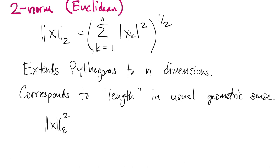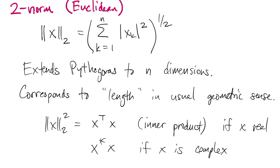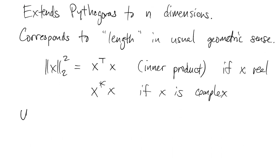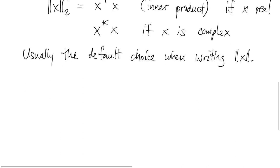The 2-norm has a very important property. The 2-norm of a vector squared is the inner product of that vector with itself if x is a real vector, or we have to use the Hermitian if x is a complex vector. But we won't be doing too much of that in the first half of the book. The 2-norm is usually the default choice. When you just write a norm, you usually mean the 2-norm. And that's because of this connection to the inner product.